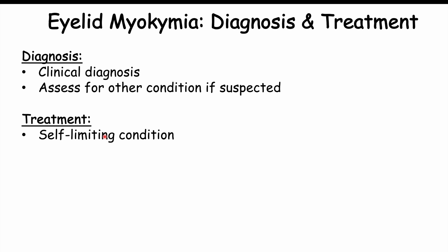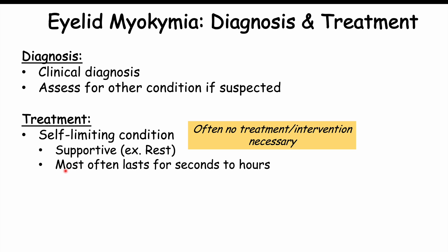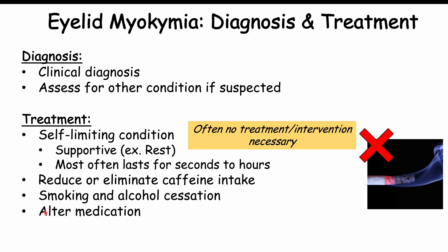Since this is a self-limiting and benign condition, often no treatment or intervention is necessary. Supportive treatments like rest and waiting are enough, as episodes often last only seconds but may last up to hours. In other cases, it is important to identify triggers — reducing or eliminating caffeine intake can help, and cessation of smoking and alcohol can also help. If a medication is causing troublesome eyelid myokymia, it may need to be altered.